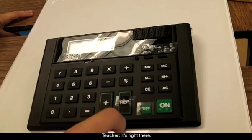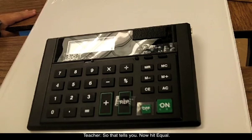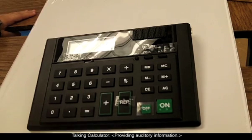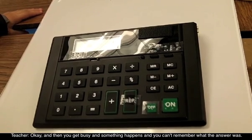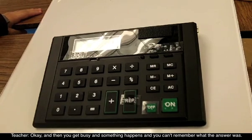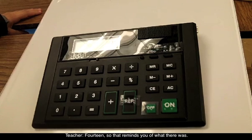To the left of the off button. One. So the last number you put in was one. One. So that tells you. Now hit equal. Equal. Fourteen. And then you get busy and something happens and you can't remember what the answer was. So what button are you going to hit then? Touches repeat. Fourteen. Fourteen. So that reminds you of what there was.